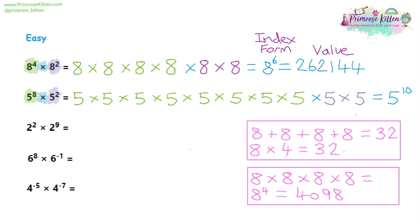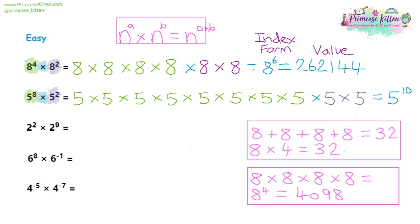Now you may have noticed something. In our first example, eight to the four times eight to the two — the answer is eight to the six, which is just four plus two. This follows in our second example: five to the eight times five to the two made five to the 10, because eight plus two gives us 10. So any numbers that we see to the power, in the answer we need to have them added together. That's the rule we're going to be using for the rest of the examples.